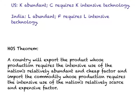A country will export the product whose production requires the intensive use of the nation's relatively abundant and cheap factor. For the US, this abundant factor is capital, and which commodity requires intensive use of this factor? It is clothing, and hence the US will export clothing.